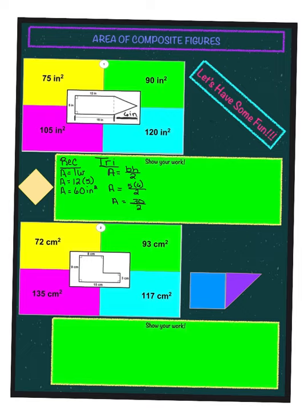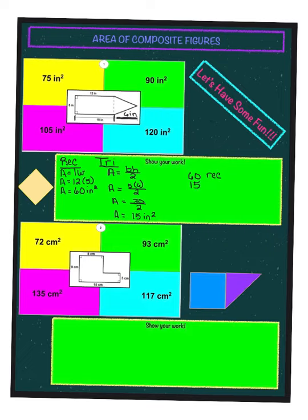We have 30 divided by 2, which is 15, so the area of our triangle is 15 inches squared. Now we have the area of the rectangle and the area of the triangle. To find the area of the entire composite figure, we add those two together: 60 from the rectangle plus 15 from the triangle gives us 75. So the area of our composite figure is 75 inches squared.